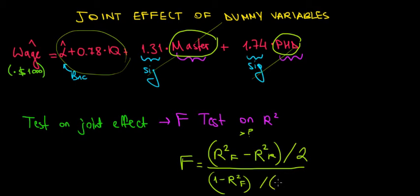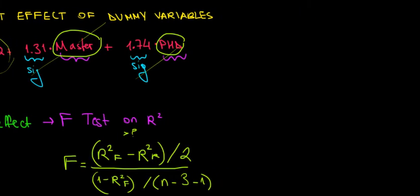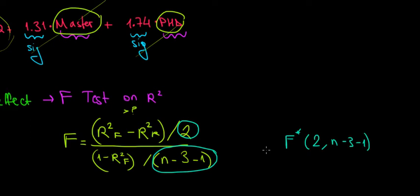The remaining degrees of freedom is the number of observations minus the number of parameters — that is, the number of independent variables in the full model, which are three, minus one. We then compare the resulting F value to the F critical value, which has degrees of freedom equal to the number of additional variables — two — and the remaining degrees of freedom, n minus three minus one. These are always going to be part of the degrees of freedom of the F test.